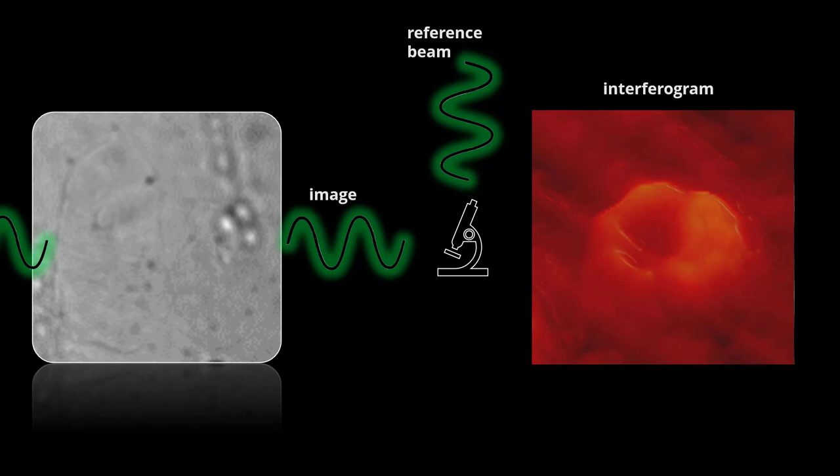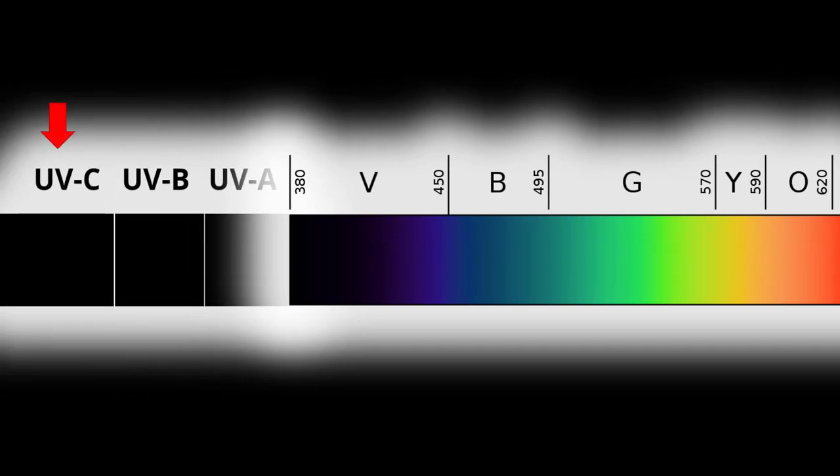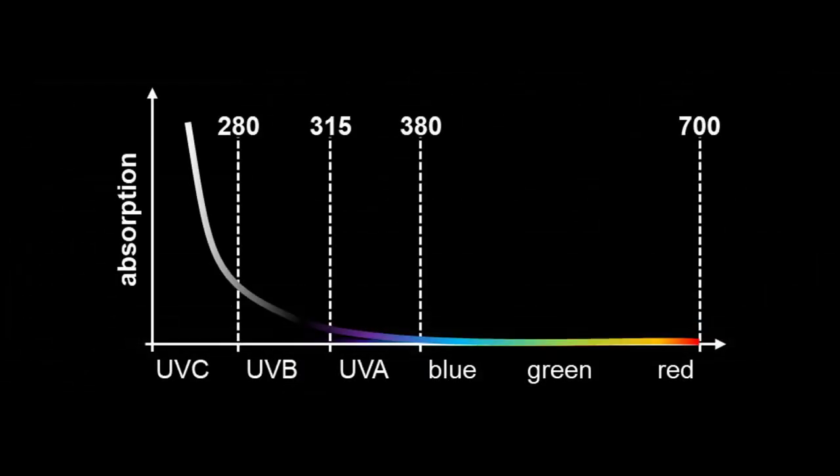However, now there is a third route to obtain contrast in unlabeled samples. The new method, which was developed at the Arctic University of Norway, uses UV light to enhance image contrast, in particular C-band ultraviolet light, which experiences much greater absorption and specificity in cells than visible light.